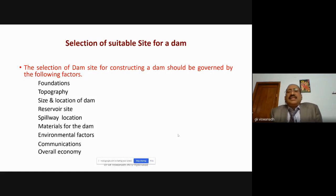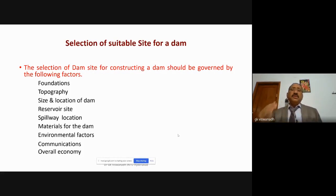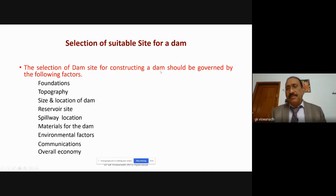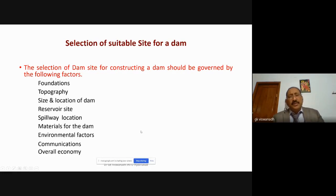The second category is the selection of a suitable site for a dam. Along a stream, which location is preferred for constructing a dam? The selection should be governed by various factors: foundation, topography, size, and location of the dam and reservoir site — including total surface area, storage capacity, area getting submerged upstream, availability of a good location for the spillway, type of material used, environmental factors, communication, and overall economy.